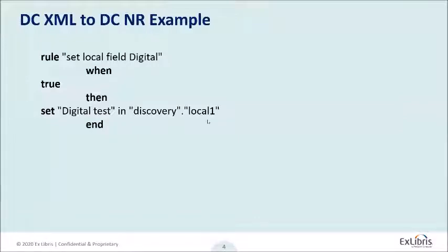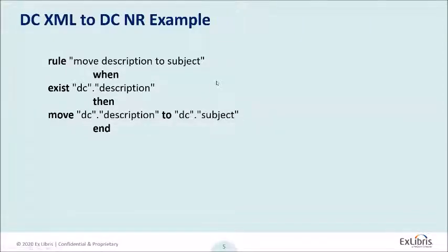If you have a DC record and just want to change or tweak a few things, the first example is to create a local field in your DC. Once set — in this example it's local one — a local field one in PrimoVE will be attached to this specific Dublin Core record, because discovery.local1 or .local15 can be used for a local record in the case of external data sources. The next example is to move information — in this case, from description to subject: check if description exists, and if so move it to subject.